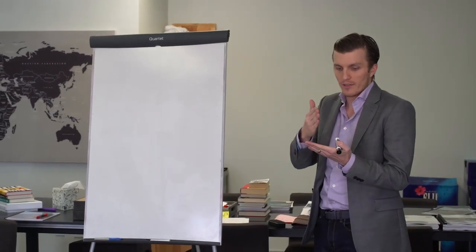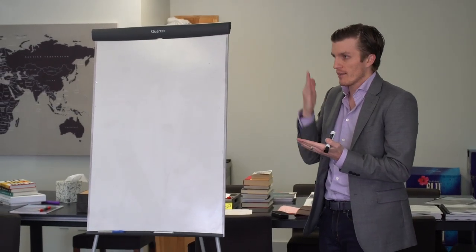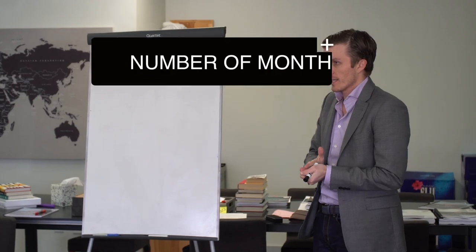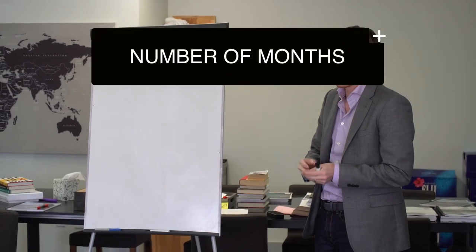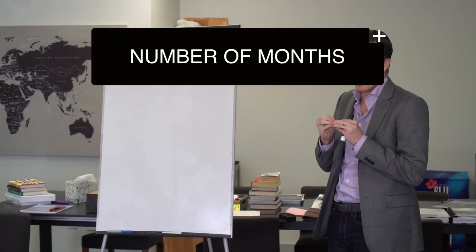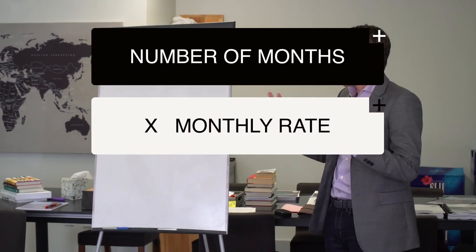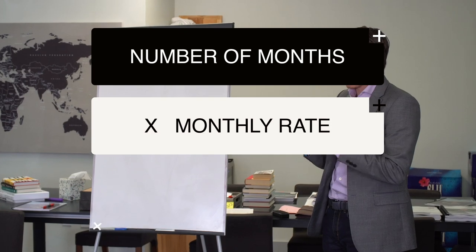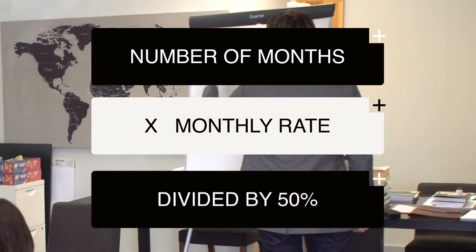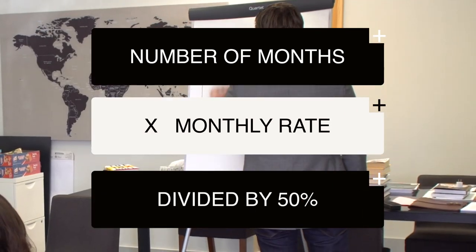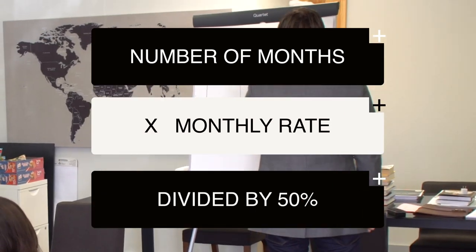The calculation we use is the number of months that need to be cleaned up — four, six, whatever it is — times the monthly rate. Then we take that total by 50%.